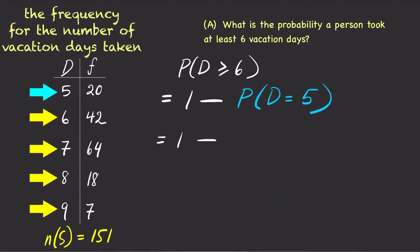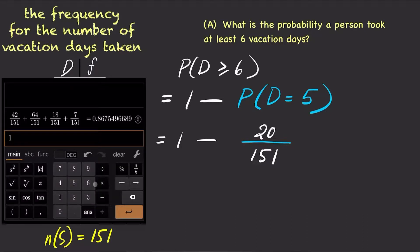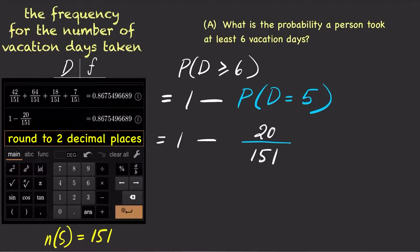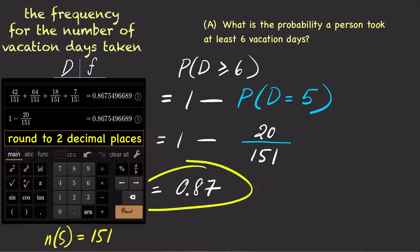For d equals 5, the probability is 20 over 151. Use your calculator and plug in 1 minus 20 over 151, and the answer is 0.87. Notice, doing the problem directly or doing it by the complement rule got us the same answer.